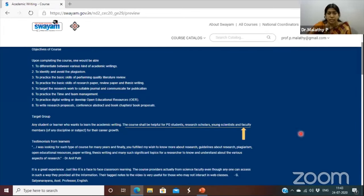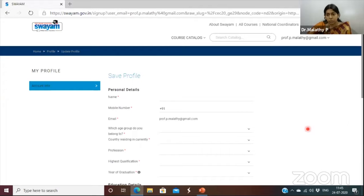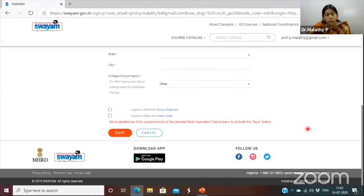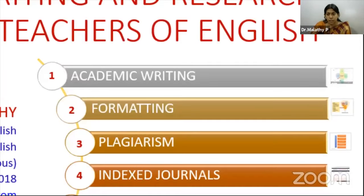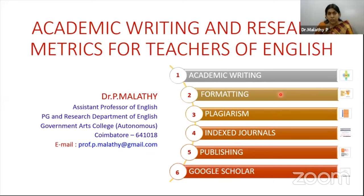Now I move on to the next slide. When you go to Swayam, click on the link given previously, fill your profile, and you can join the course. Academic writing is aimed at getting published in indexed journals. These indexed journals follow a style. When we say academic writing follows a style, what are the styles we have to be familiar with? That comes under formatting.